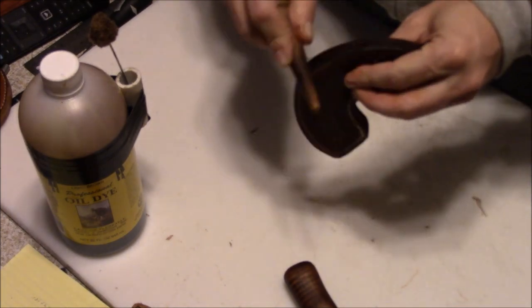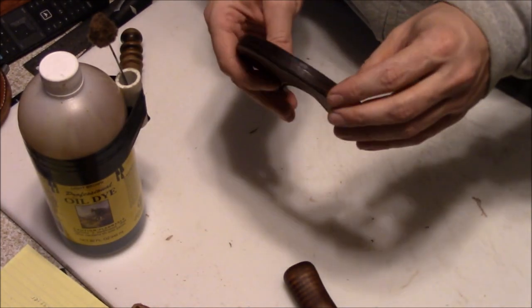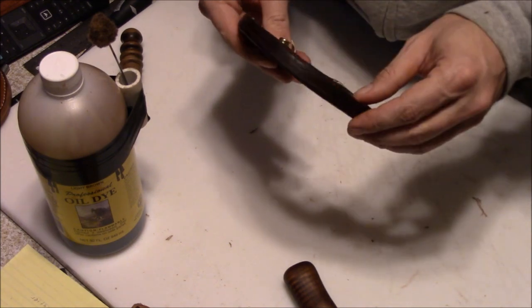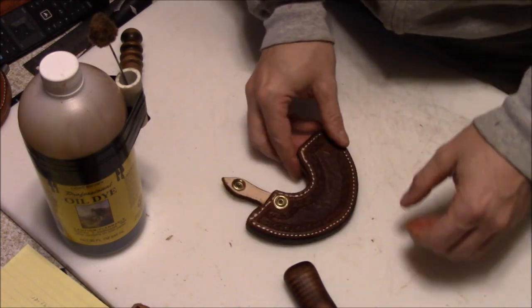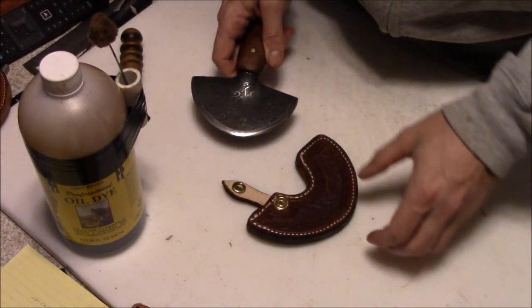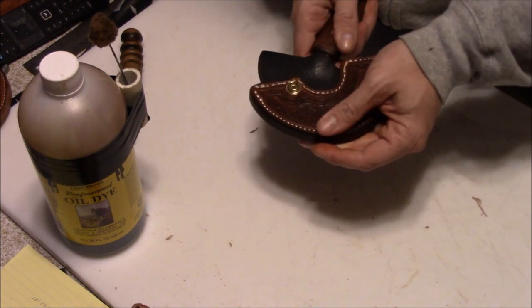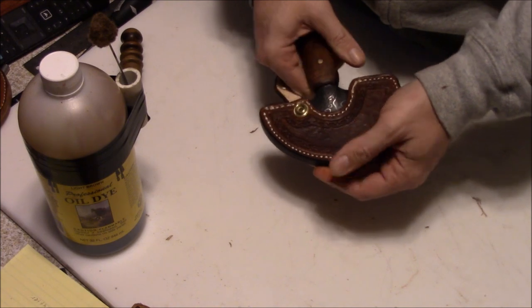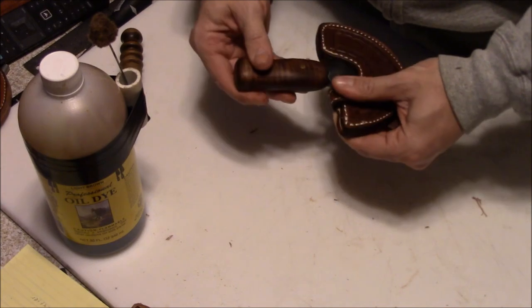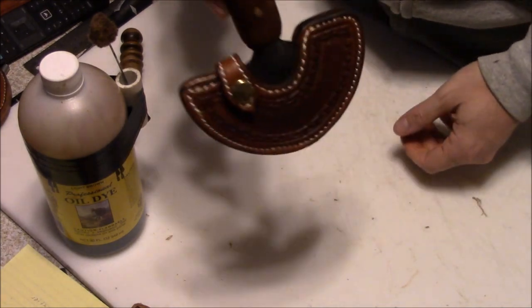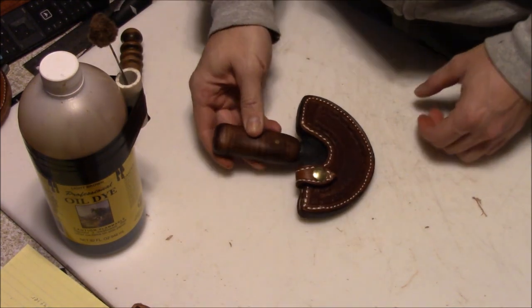And once that's kind of settled in a little bit, you go back and burnish it with, in this case, a wooden slicker to get a nice smooth finish on your edge. And of course, always important, make sure that whatever you're putting in it is going to fit. And this tight style sheath, the knife sort of catches on one side and then rolls in. So I've got a finished leather round knife sheath now.